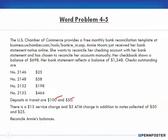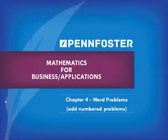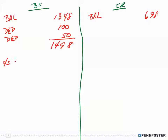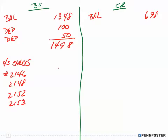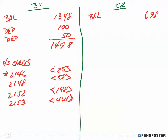The service charges and ATM charges are on the bank statement, so we need to address those for our check register. Now for the outstanding checks — we've taken care of deposits — we have check numbers 2146, 2148, 2152, and 2153 in the amounts of $25, $25, $58, $198, and $464. Remember, brackets mean subtraction. When I subtract those from $1,498, I end up with a reconciled balance of $753.